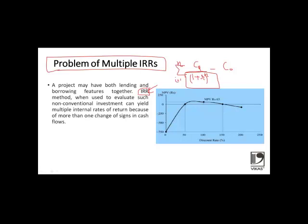This is an example where you get 2 internal rates of return. Here you get one internal rate of return and here is also another internal rate of return. Now for the same project, how can there be 2 internal rates of return?